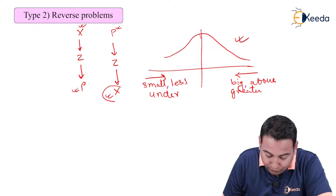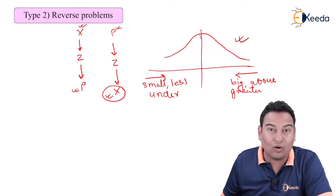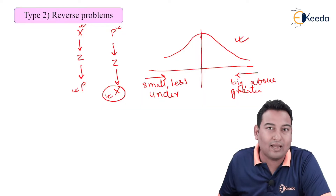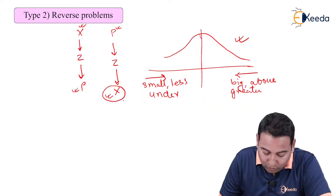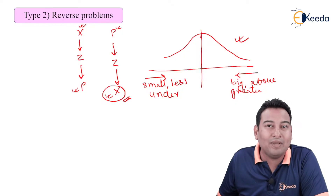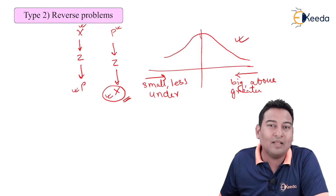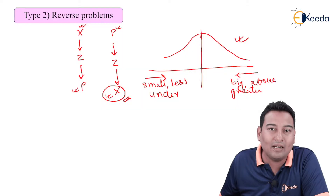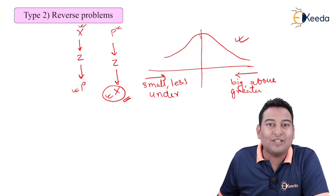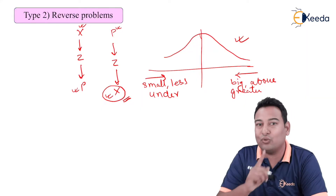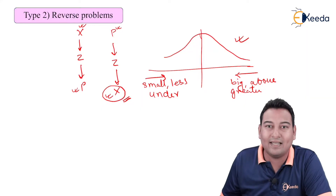One more thing — whether x is asked or not, it is difficult to identify whether the problem belongs to type 1 or type 2. For that purpose, you need to remember what x is. x is whichever variable whose mean and standard deviation is given. For example, if marks mean and standard deviation is provided, x is marks. If salary mean and standard deviation is provided, x is salary.